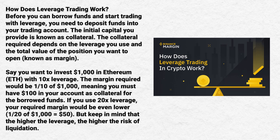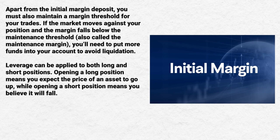Say you want to invest $1,000 in Ethereum with 10x leverage — the margin required would be one-tenth of $1,000, meaning you must have $100 in your account as collateral for the borrowed funds. If you use 20x leverage, your required margin would be even lower — that's one-twentieth of $1,000, which is $50. But keep in mind that the higher the leverage, the higher the risk of liquidation. Apart from the initial margin deposit, you must also maintain a margin threshold for your trades. If the market moves against your position and the margin falls below the maintenance threshold — also called the maintenance margin — you need to put more funds in your account to avoid liquidation.